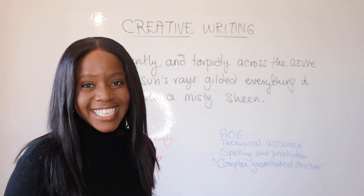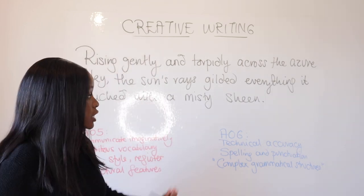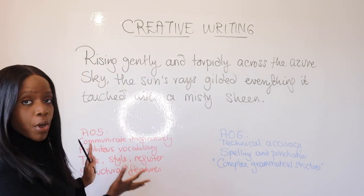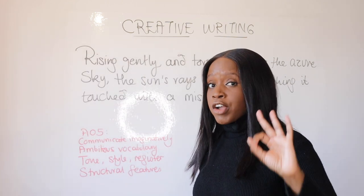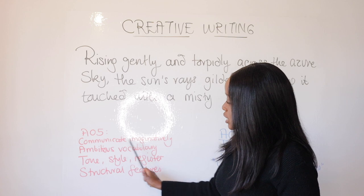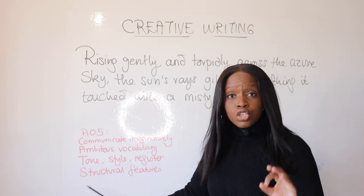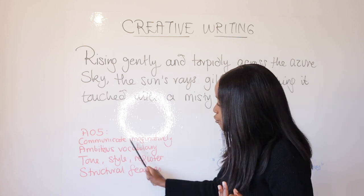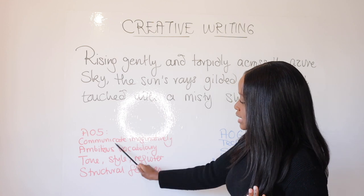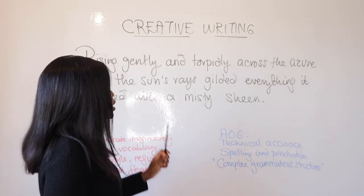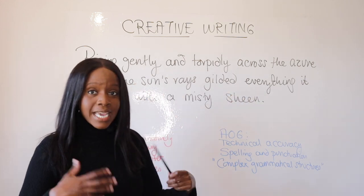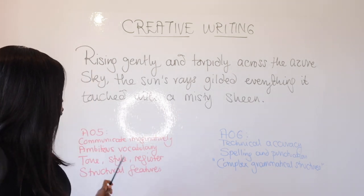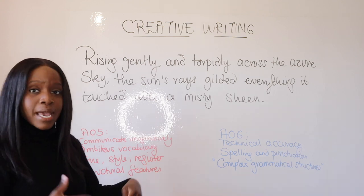Let's begin with the first and most important assessment objective — your AO5. AO5 carries the bulk of the marks, while AO6 is worth 20% of the overall marks. AO5 tests your ability to communicate imaginatively, use ambitious vocabulary, and what examiners call your tone, style, and register, as well as structural features. In your opening sentence, you are using pathetic fallacy to set the scene — and interesting pathetic fallacy at that — so you're already communicating imaginatively from the very first line.